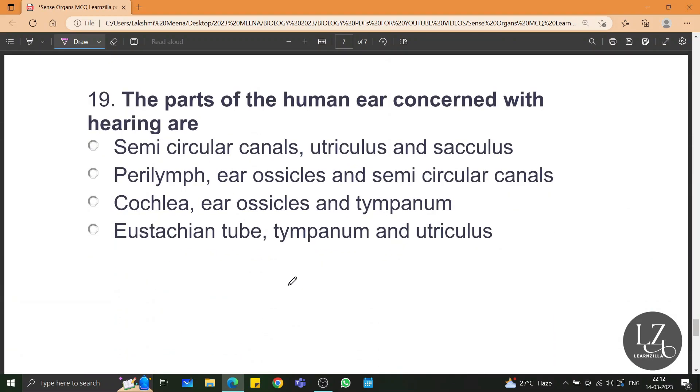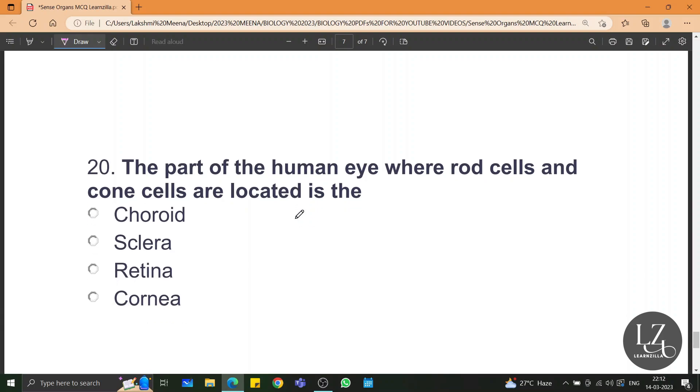The parts of the human ear concerned with hearing are cochlea, ear ossicles and tympanum. Because there are two functions of the human ear: hearing as well as balance. Some of the other parts are for balance as well. The organ which is mainly concerned with hearing includes these three. The part of the human eye where rod cells and cone cells or photoreceptor cells are located is the retina.